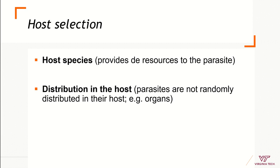Parasites don't happen randomly across the anatomy of the host, across host species, or across geography. So parasites have specific niches. As you saw in the example of the parasite in the fish, the parasite was not randomly across the body of the host — it was specifically living in the mouth.